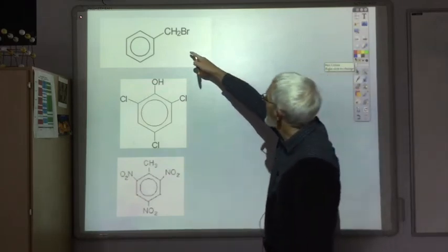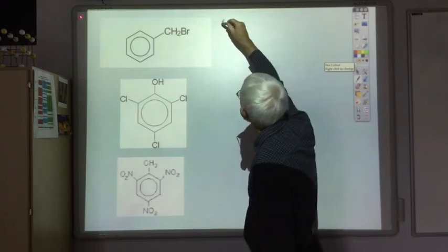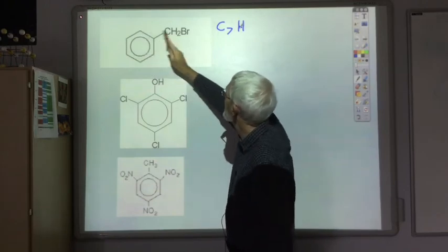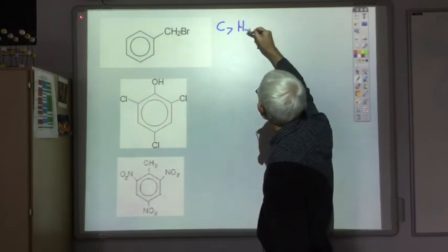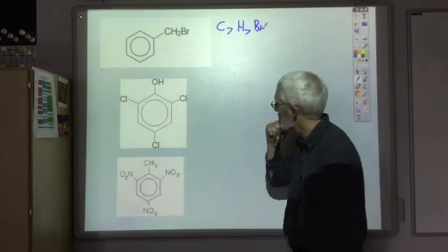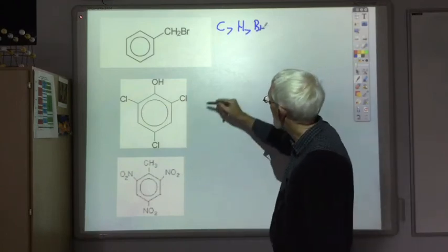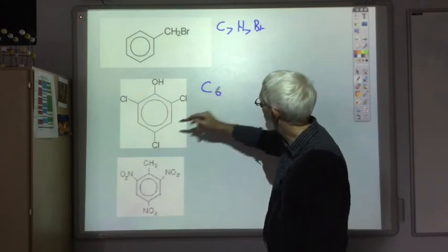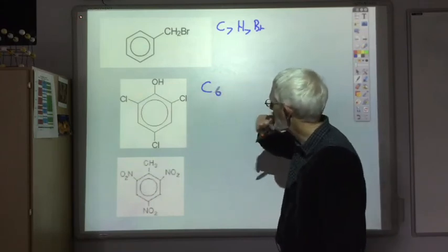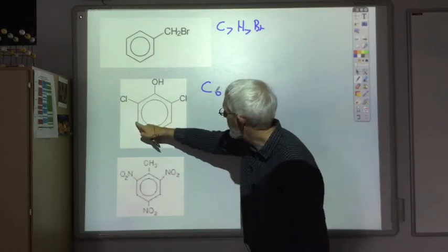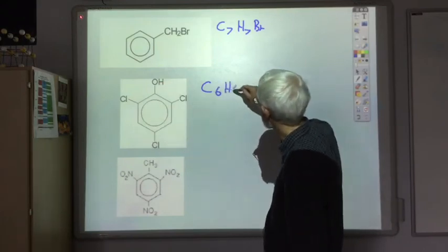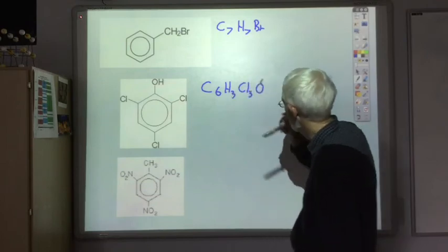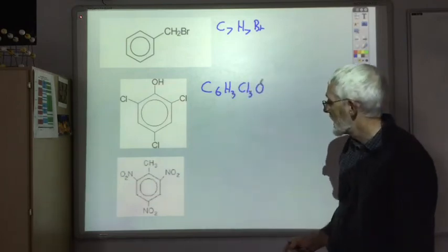For the first one, we've got six carbons in the ring and one there, so it's C7. Five hydrogens in the ring, two there, so H7 Br. And this one, we've got the six carbons in the ring, three hydrogens, three chlorines and one oxygen.